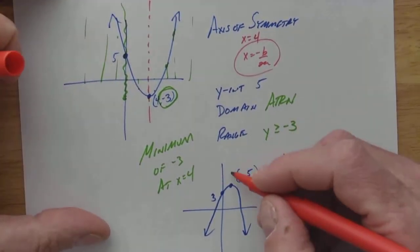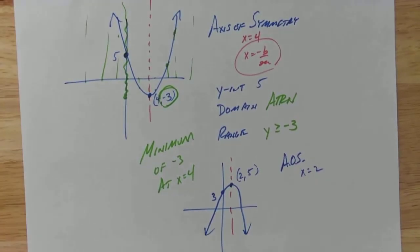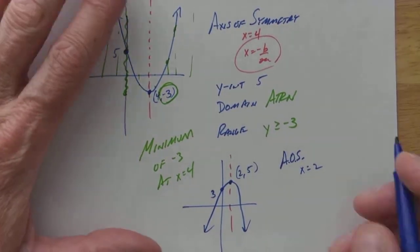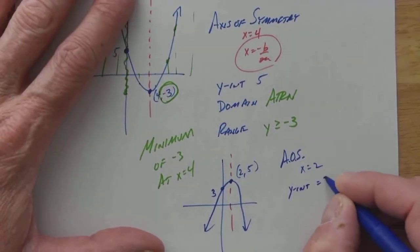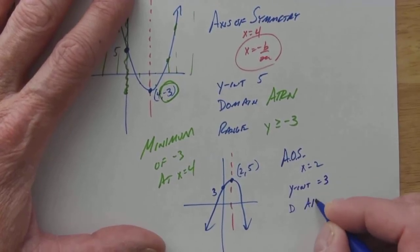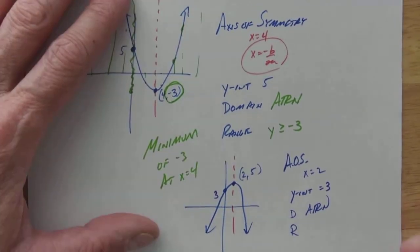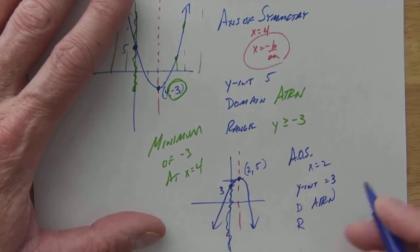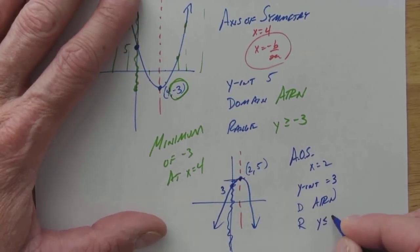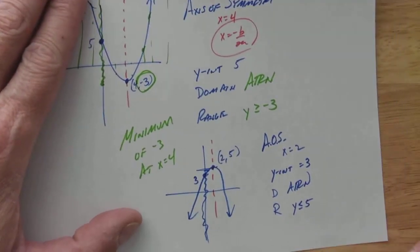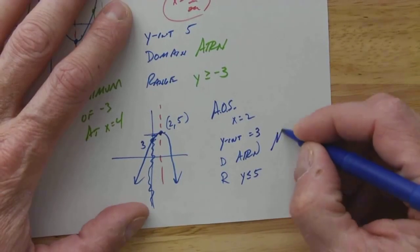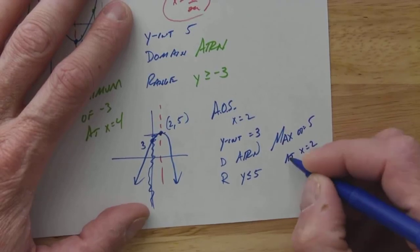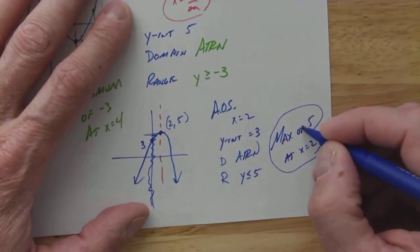My axis of symmetry is x equals 2. Why? Because it's 2 over. Everything on the right side is the same as everything on the left side. They could fold them over, they match up. My y-intercept is 3. And my domain, remember, is always all real numbers. And my range in this case is what values were used from here on down. So y is less than or equal to 5. Does this one have a maximum or a minimum? This one has a max of 5 at x equals 2.